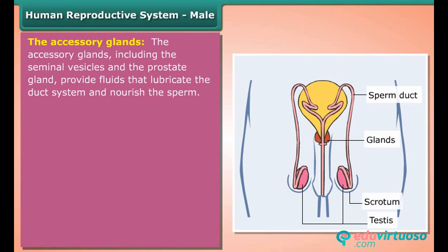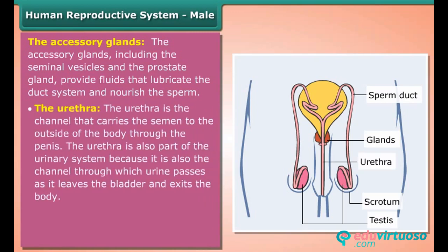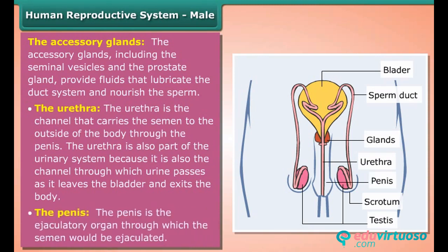The urethra is the channel that carries the semen to the outside of the body through the penis. The urethra is also part of the urinary system because it is also the channel through which urine passes as it leaves the bladder and exits the body. The penis is the ejaculatory organ through which semen is ejaculated.